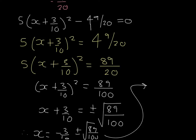Which if you want to, you can write as negative 3 tenths plus or minus the square root of 89 over 10.